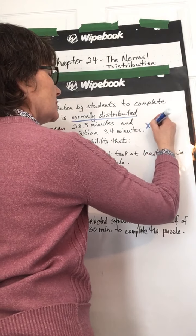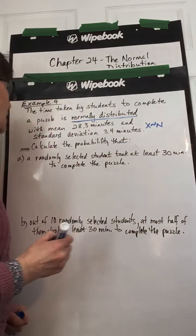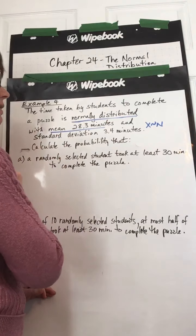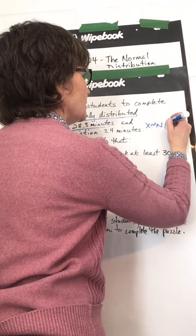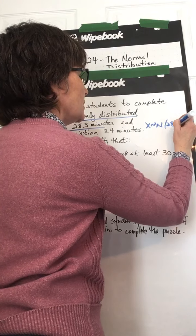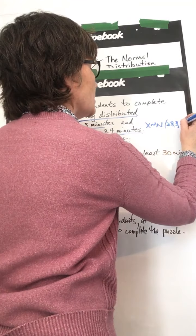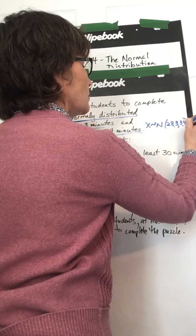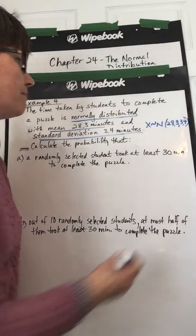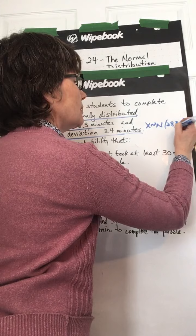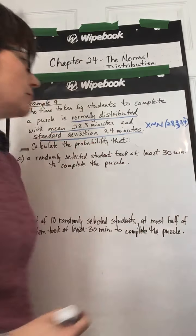Okay, so that means x is distributed normally with mean 28.3 minutes, so mean 28.3, and standard deviation 3.4, so 3.4 squared because we write the variance there. That's a comma, and those are dismos.